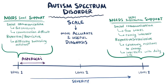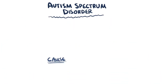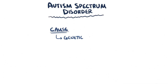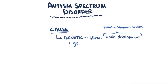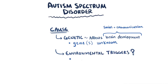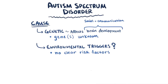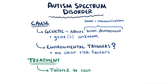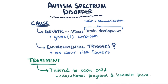Generally speaking, Autism Spectrum Disorder is thought to have a genetic cause which ultimately affects brain development, specifically areas that affect social and communication behavior. Which genes or combination of genes are affected in ASD is still very much a mystery. In addition, there are a bunch of environmental triggers that have been explored, but at this time there are no clear risk factors that have been identified. There is also no cure for Autism Spectrum Disorder, and treatment or management is specifically and carefully tailored to each child, including things like specialized education programs and behavior therapy that seek to maximize quality of life and functional independence.